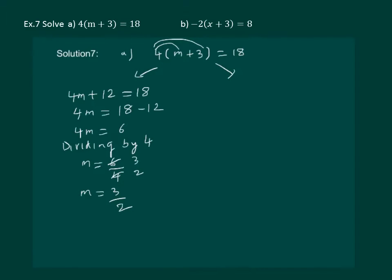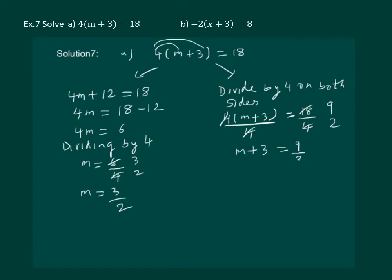Now let us do it with the other method. Divide by 4 on both sides. This will give us 4 into m plus 3 whole divided by 4 whole equal to 18 by 4. Let us solve this further. We get m plus 3 equal to 9 by 2.